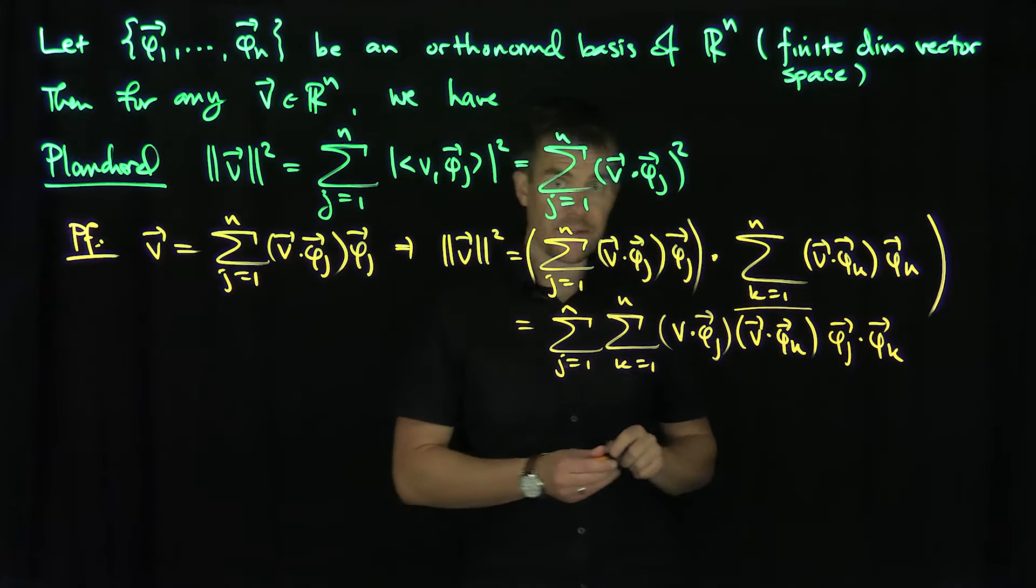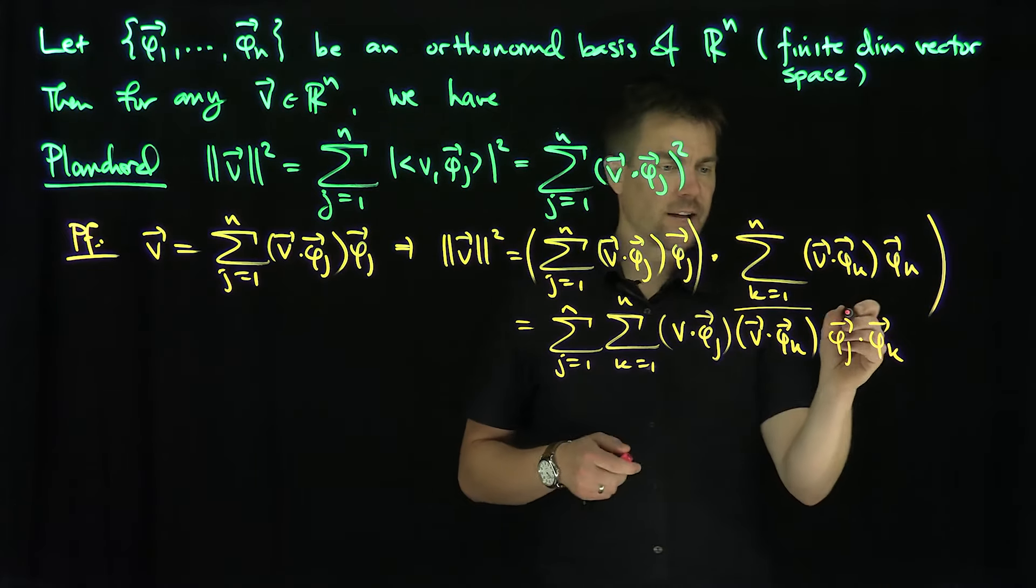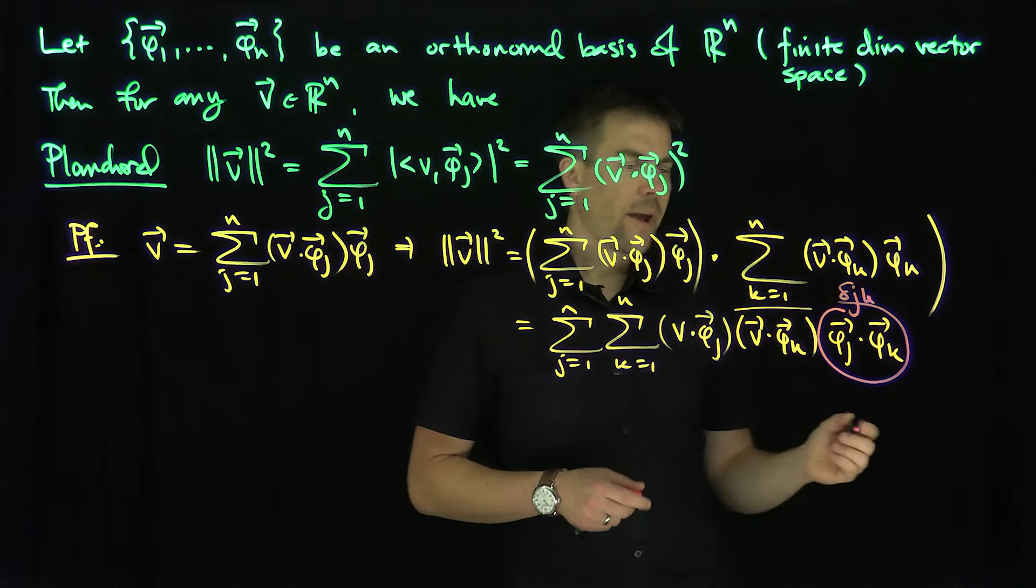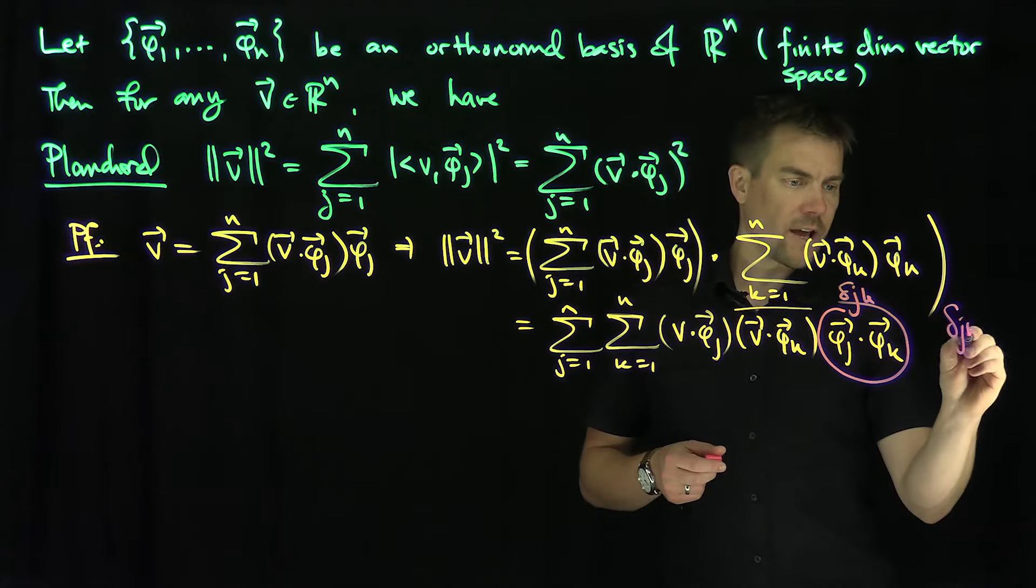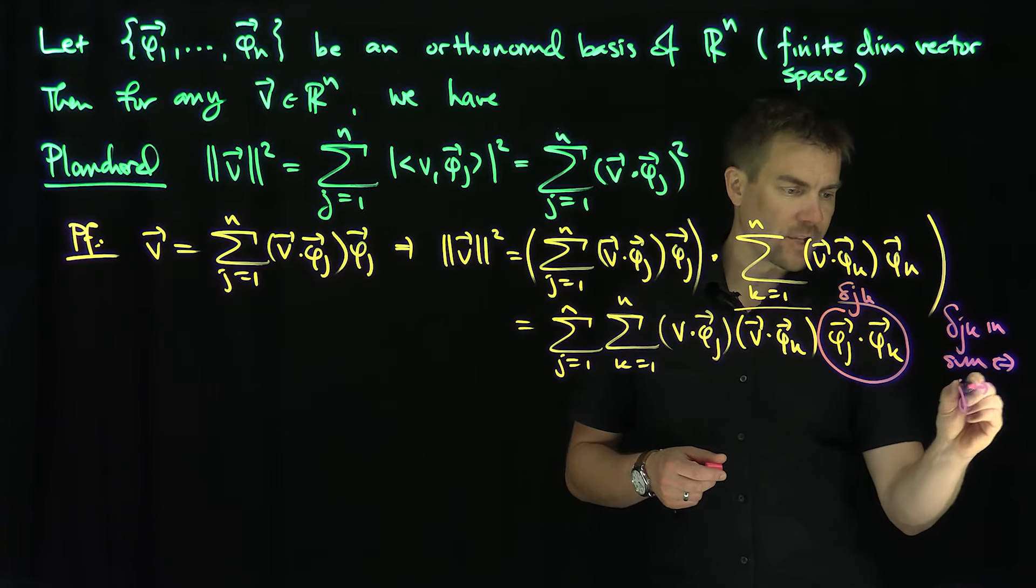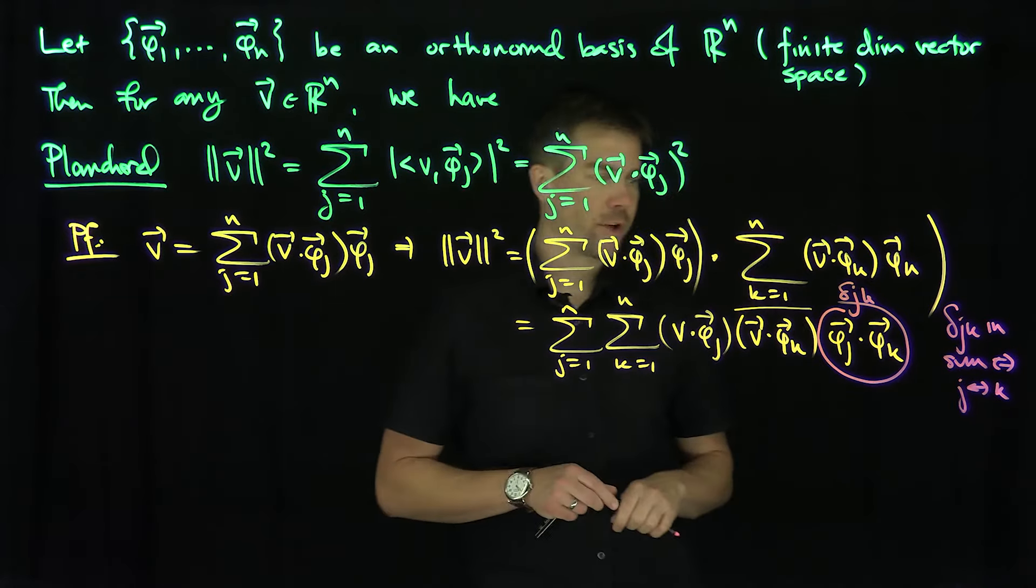Now, what is phi_j dot phi_k? And this is a very useful thing that we see in tensor analysis, is that this is the Kronecker symbol delta_jk. And whenever you see delta_jk, delta_jk in a sum implies if and only if j can be replaced with k.